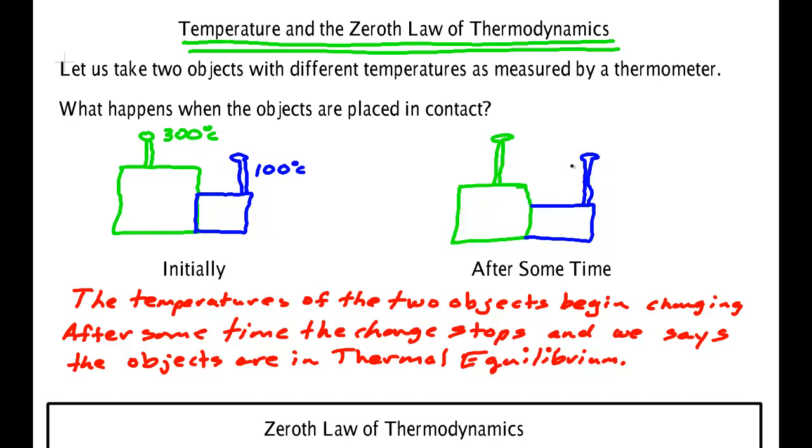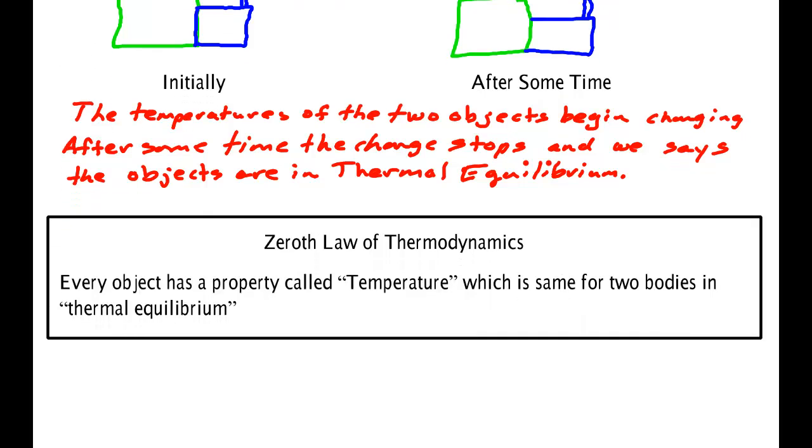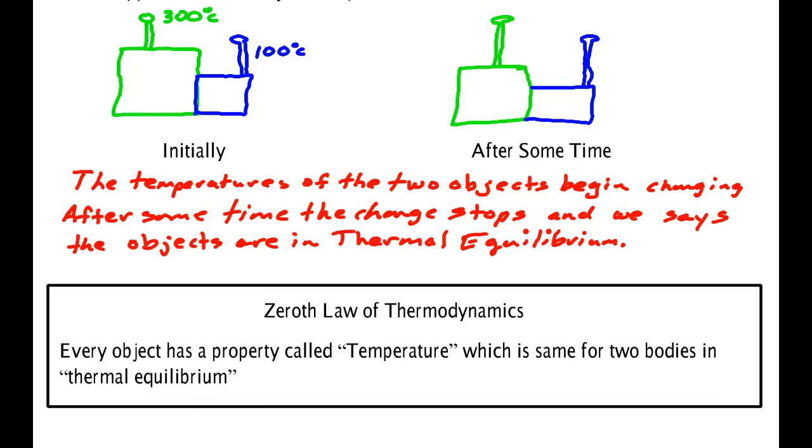What they will have when the temperature quits changing is the same temperature. And that's basically what the zeroth law of thermodynamics says. In its most profound way, it says that every object has a property which we call temperature. And that property, temperature,